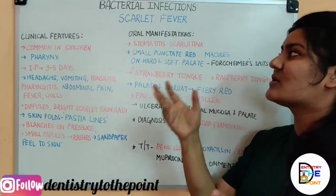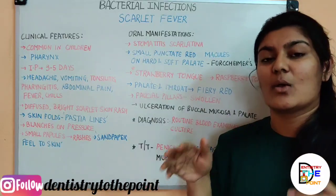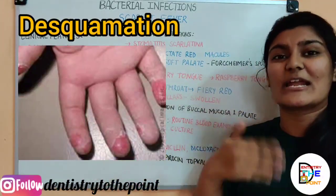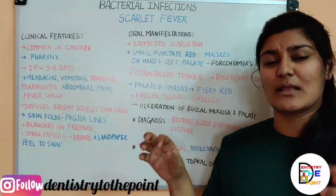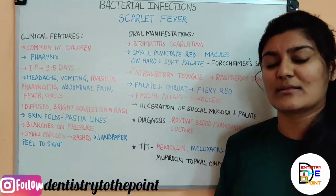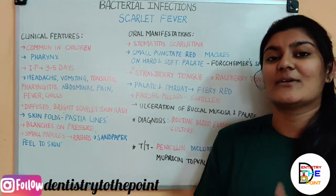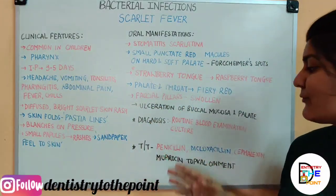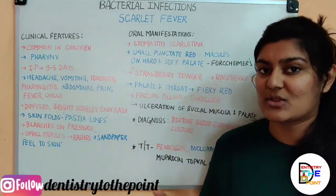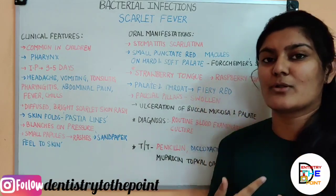Pertaining to treatment, sometimes there is no need for specific treatment because the disease undergoes clinical termination within one week. The oral mucosa, tongue, and skin heal on their own through desquamation — shedding of the outer layer of skin. However, since it is a bacterial infection, antibiotics such as penicillin, dicloxacillin, and cephalicin can be given. For oral discomfort, local application of mupirocin topical can provide relief.